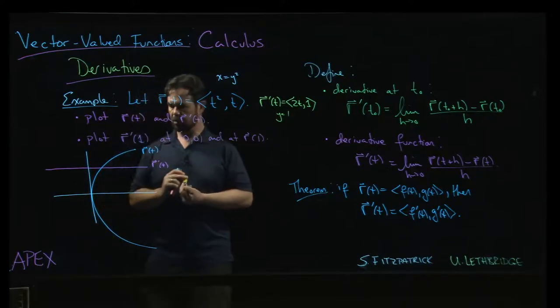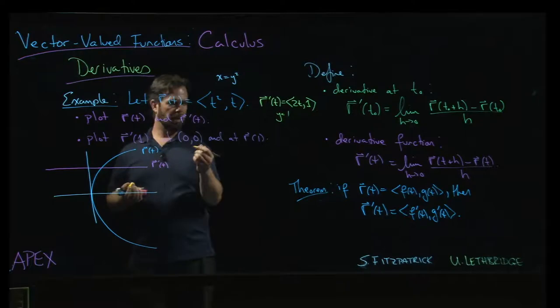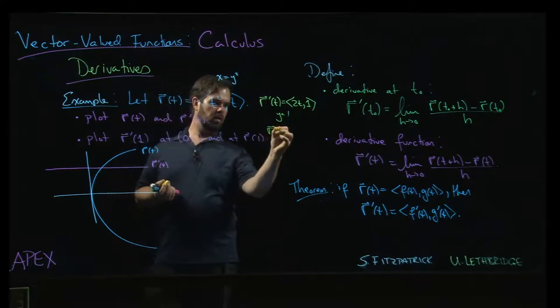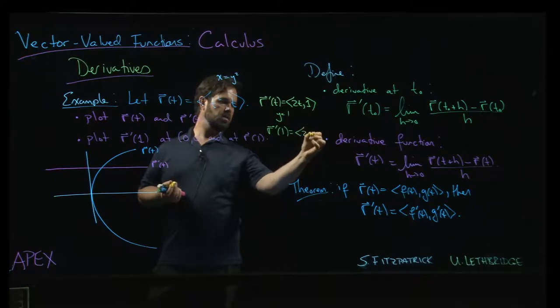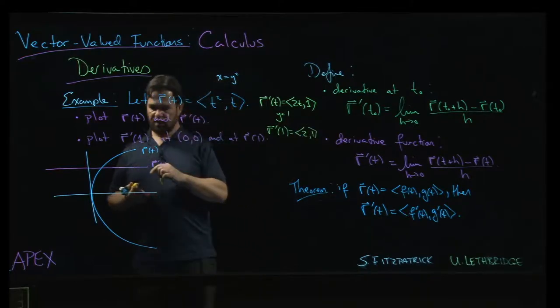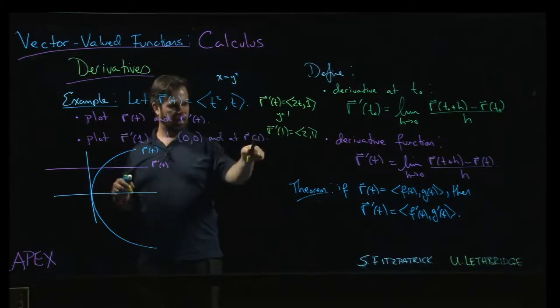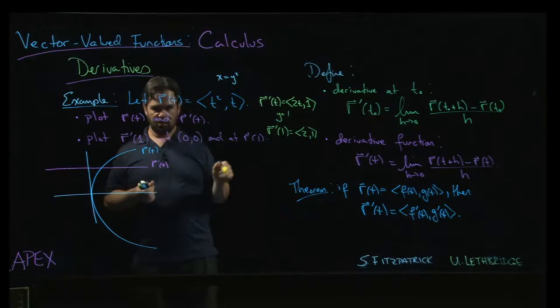Now one of the things you'll notice as written here, I said okay well plot this, calculate this vector r prime of 1. So r prime at 1 is just the vector 2, 1, and I say plot it at the origin, right? Tail at the origin. And then do it again plotting at r of 1.